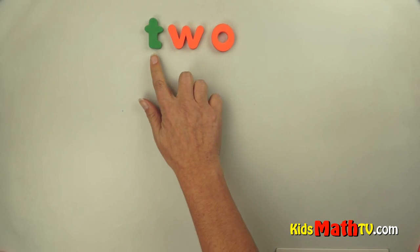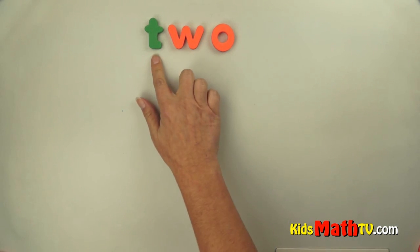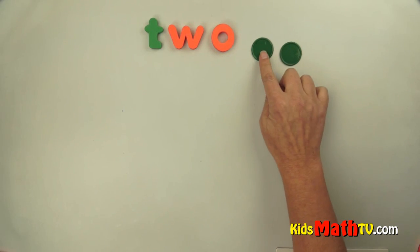In this lesson you will learn about the number two. Two is spelled T-W-O and two represents two items.